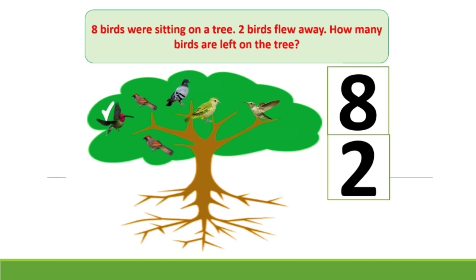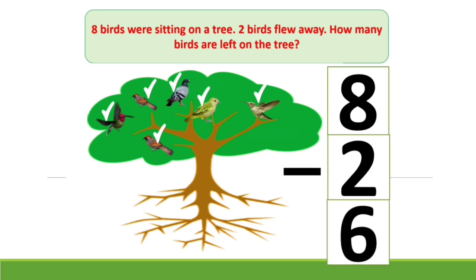We will count them. 1, 2, 3, 4, 5 and 6. Kids, there were 8 birds and 2 of them flew away. Then how many birds are left? 6 birds.